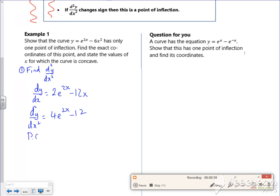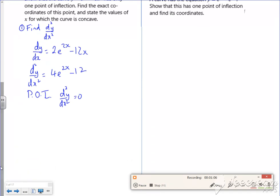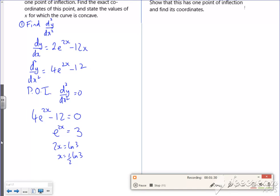So the point of inflection, I'm going to look where d²y by dx² is equal to 0. So 4e^(2x) minus 12 is equal to 0. Take the 12 over, divide by the 4, gives me e^(2x) is 3. If I take logs of it, I've got 2x is ln 3, so x is a half ln 3. So that's where I think my point of inflection is at.